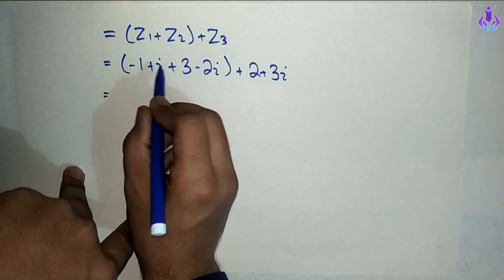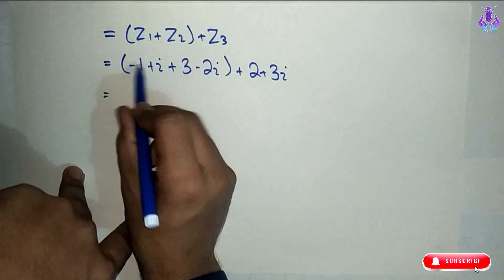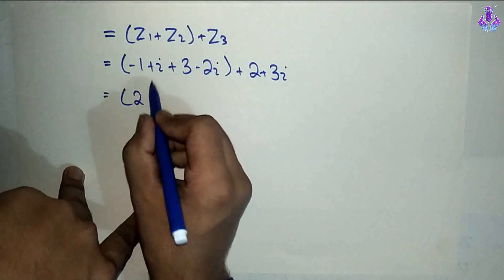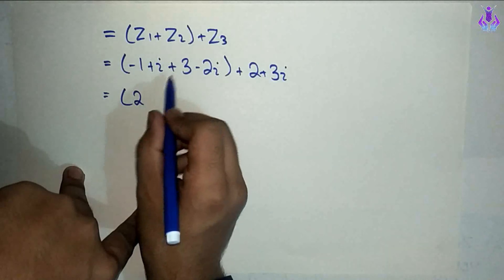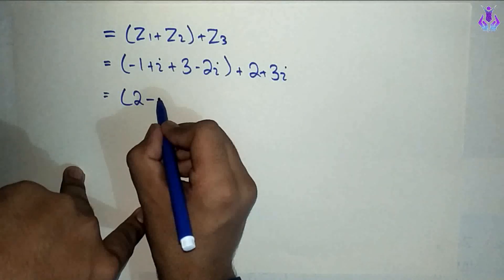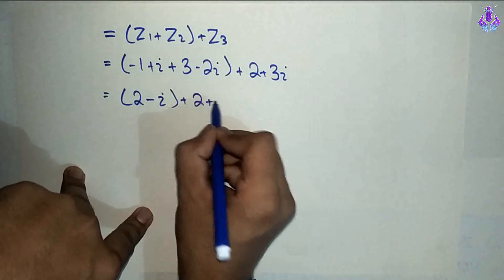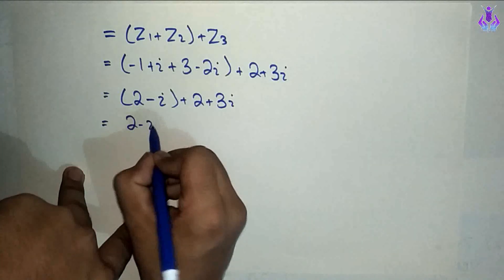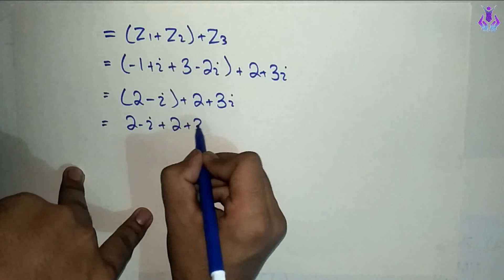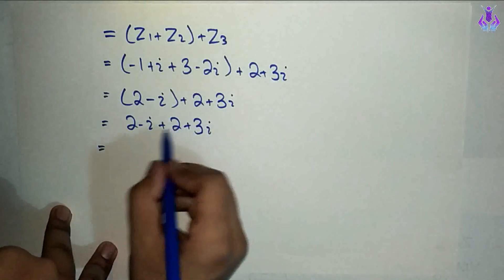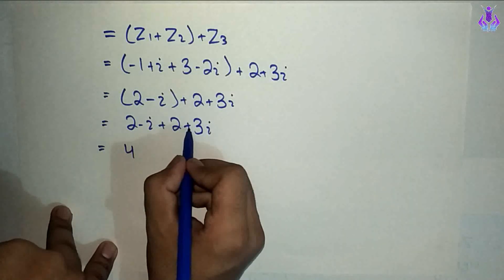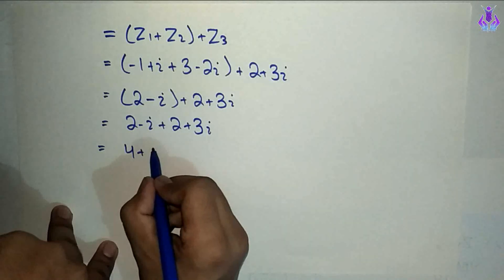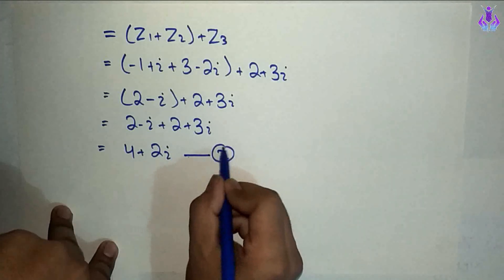Real part real mein aur imaginary part imaginary mein add ya subtract hoga. Minus plus minus ho jayega. 3 minus 1 equals 2. Badi rakam ka sign minus, so imaginary: minus 2 iota. Plus 2 plus 3 iota. Bracket hatate hain: 2 minus iota plus 2 plus 3 iota. Real: 2 plus 2 equals 4. Imaginary: minus iota plus 3 iota equals 2 iota. So RHS equals 4 plus 2 iota. Yahan ayi hamare paas equation 2.